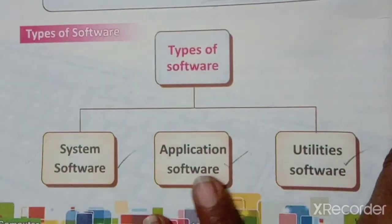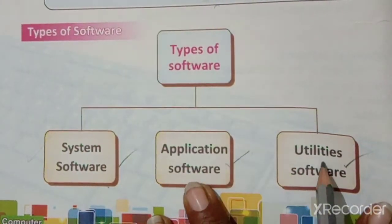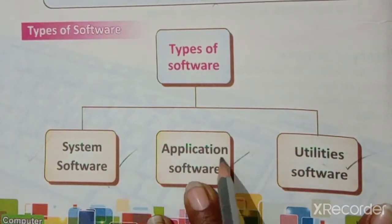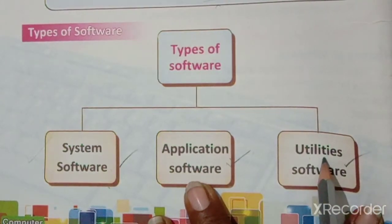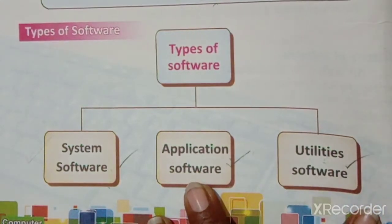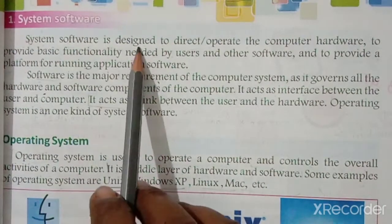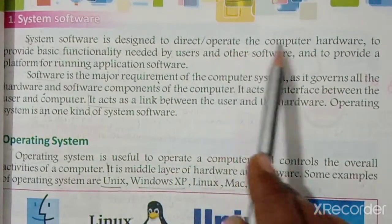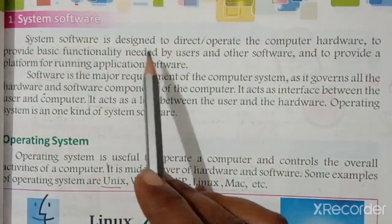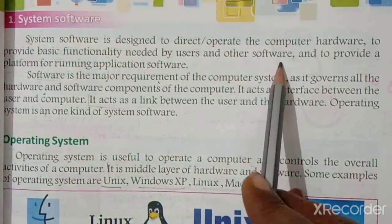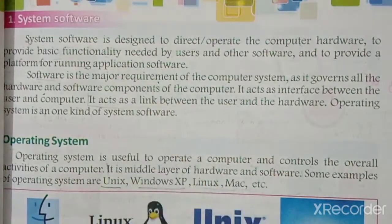The types of software are: system software, application software, and utility software. These are the three parts of software. System software operates the computer hardware to provide the basic functionality needed by users and other software, and to provide a platform for running application software.